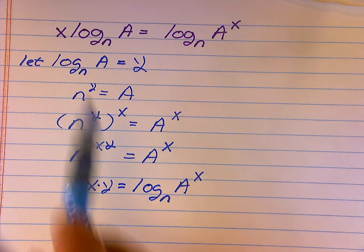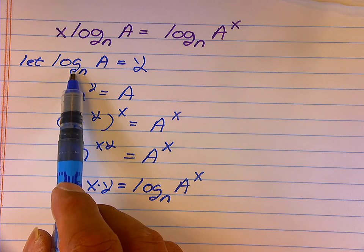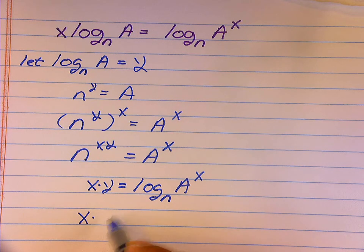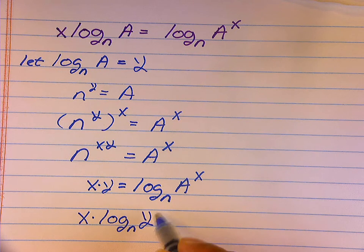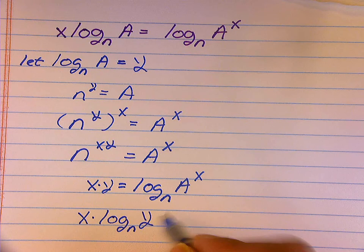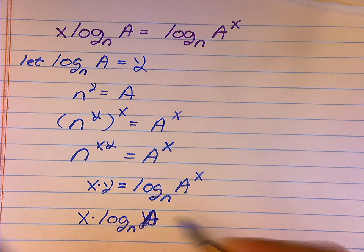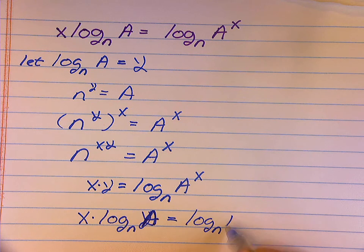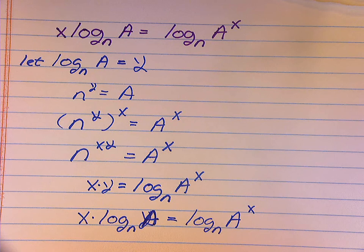Now, I'm going to get rid of my y by going back to what I originally assigned the value of y, log base n of A. So, by substitution, x times log base n of A equals log base n of A to the x. Which means I have proven that the left and right hand side of those equations are in fact equal.